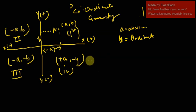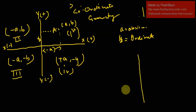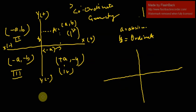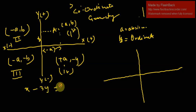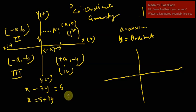To plot any point, first check the signs of the abscissa and ordinate, then you can locate it easily. Now, if we have to draw a line or represent a line graphically, we use its equation. For example, if we have the equation x minus 3y equals 5, we substitute x in terms of y: x equals 5 plus 3y. Now we will draw a table to find the coordinates of x and y.